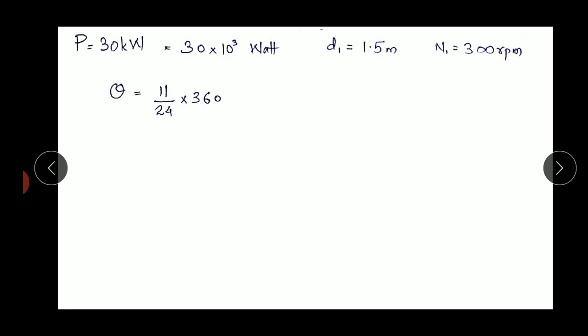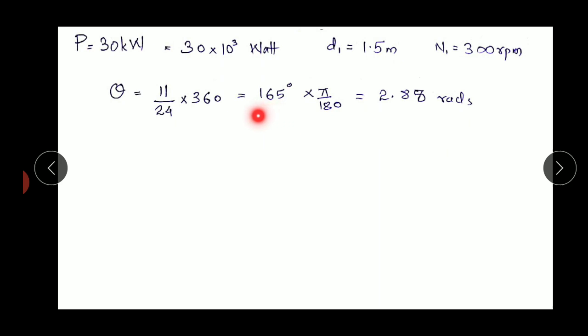The angle of lap theta is 11/24 × 360 degrees = 165 degrees. Since we require theta in radians, multiply by π/180, giving the angle of lap as 2.88 radians.